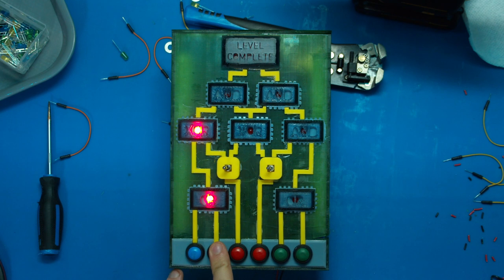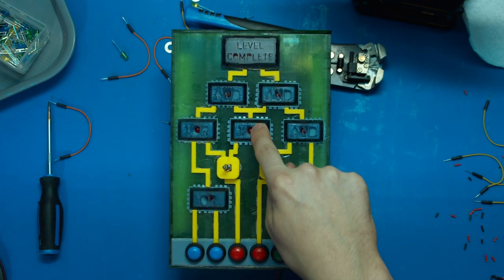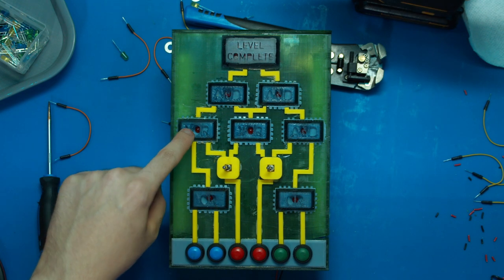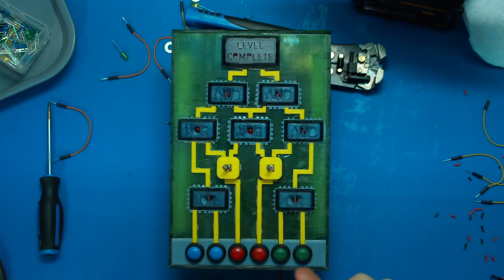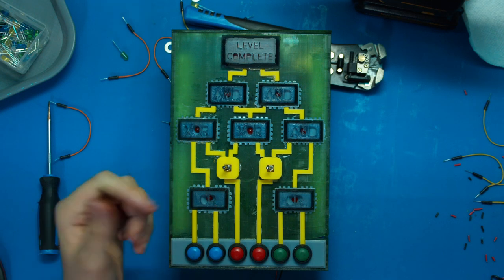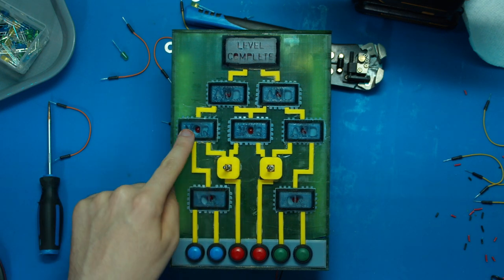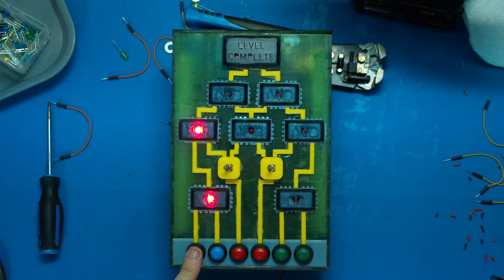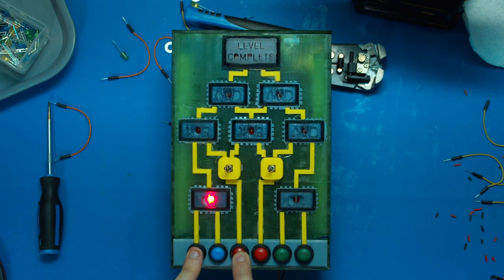So we know that we have an OR gate here and an OR gate here. So we only have to press one of the two buttons here and one of the two buttons here. So this one will turn it on. This one will turn on. Doing both will turn it on. This one will turn it on. This one will turn it on. Doing both will turn it on.